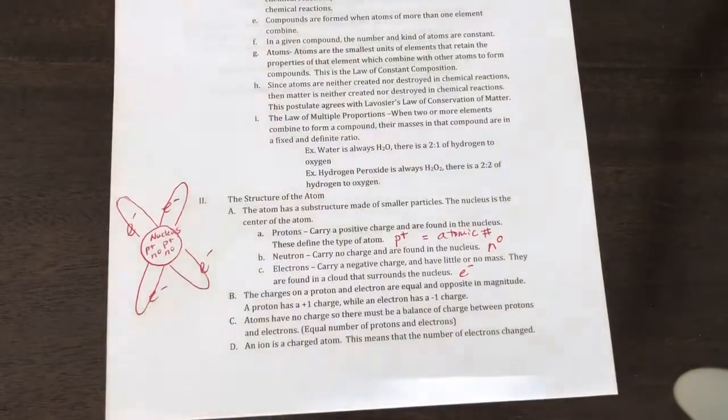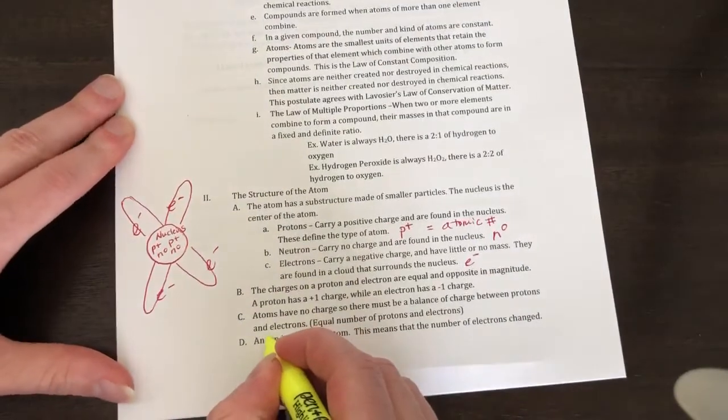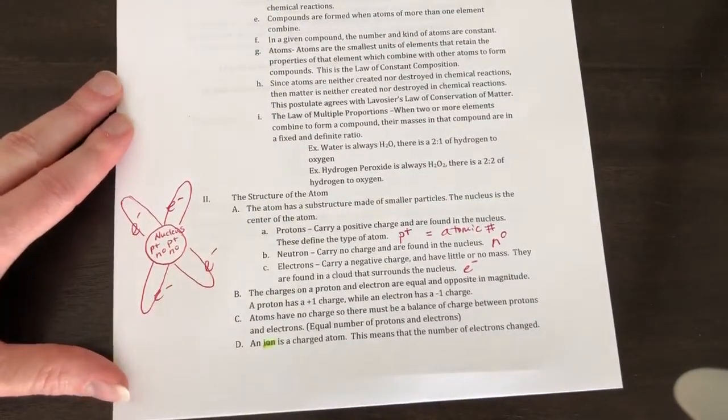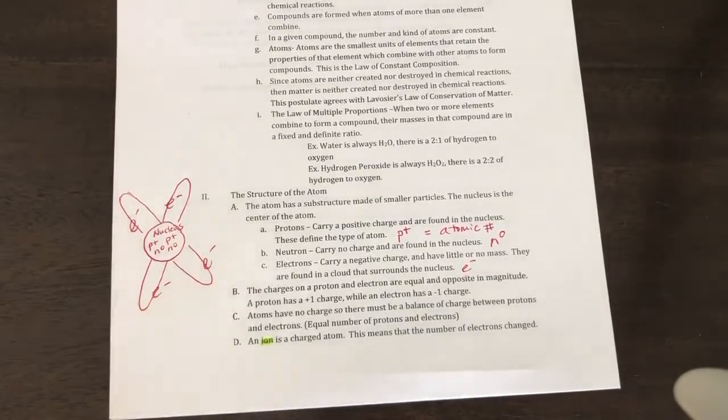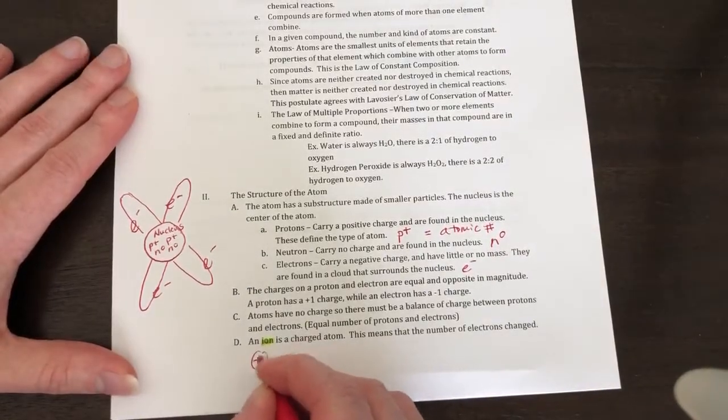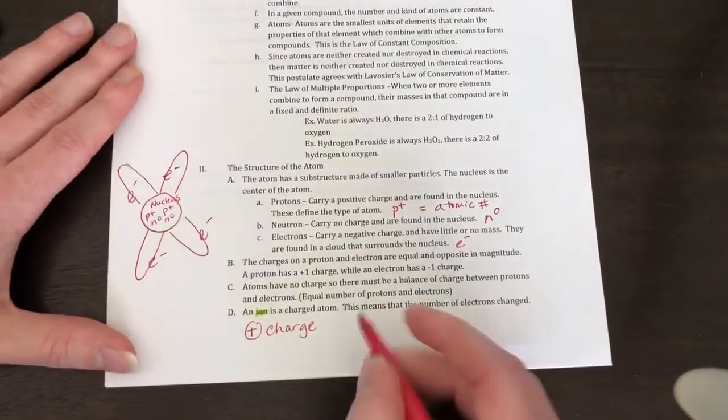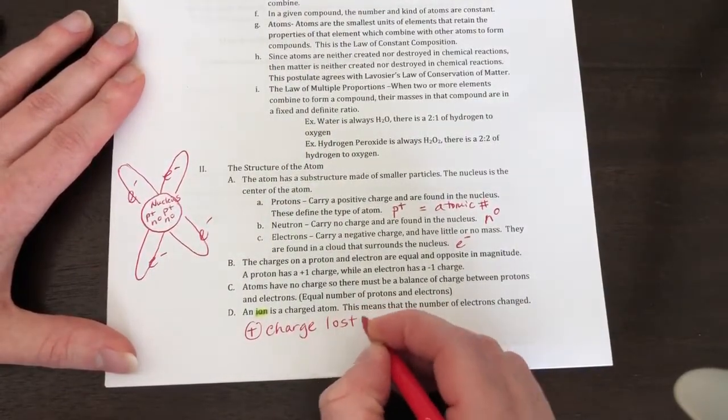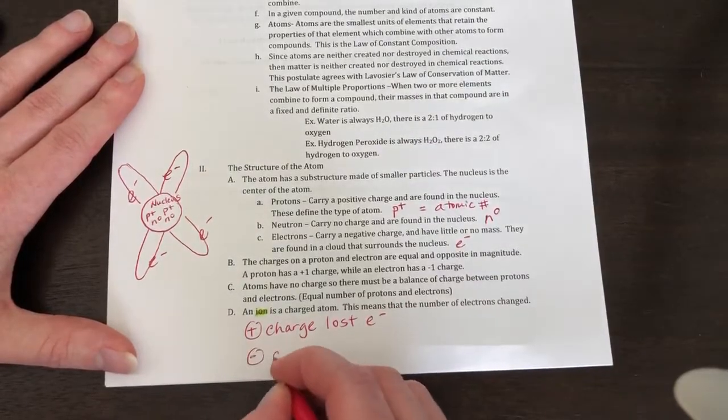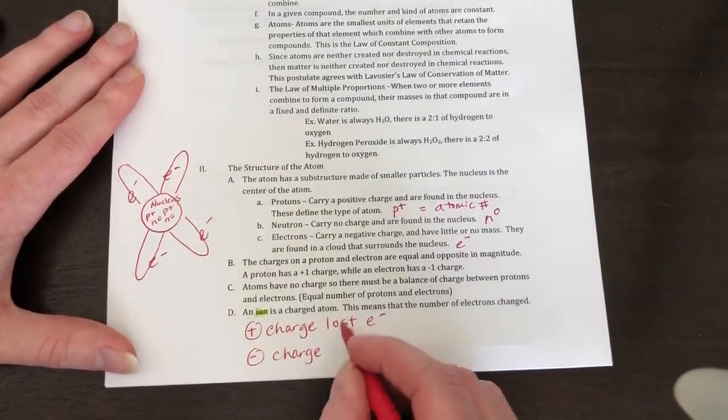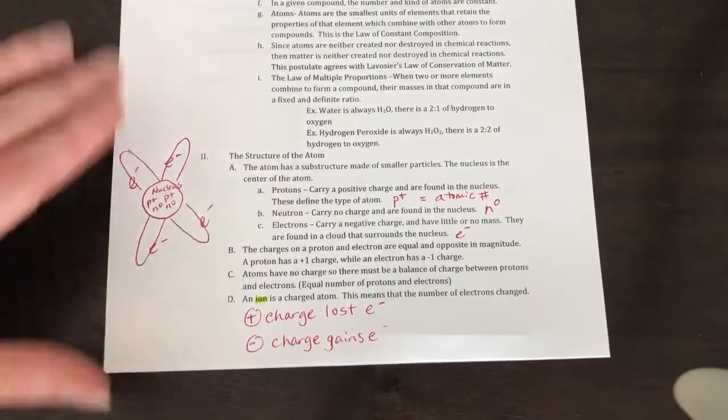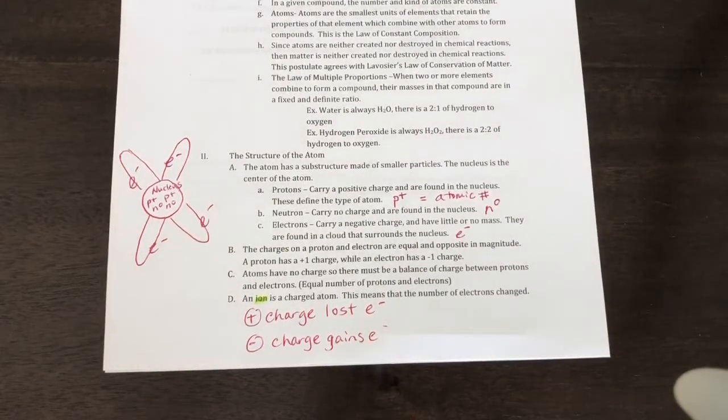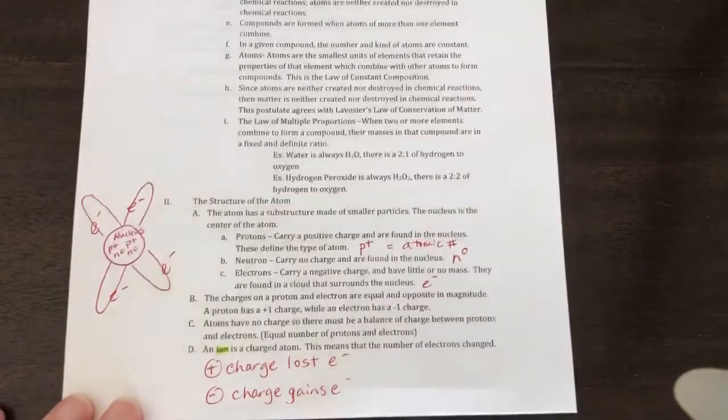Let's do this real quick. We have something called an ion. An ion is a charged atom. This means that the number of electrons changed. A positive charge means it lost electrons. A negative charge means it gains electrons. The whole goal is to always get eight valence electrons. That's called the octet rule.